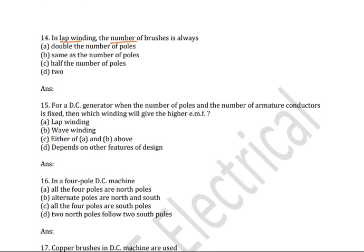Next question: in lap winding, the number of brushes is always — double the number of poles, same as the number of poles, or half the number of poles? The correct answer is same as the number of poles. In lap winding, the number of parallel paths A equals P (number of poles). In wave winding, the number of parallel paths equals 2.